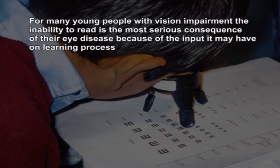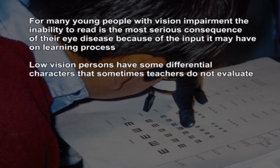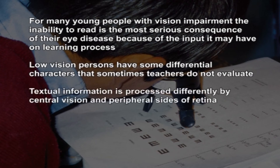For many young people with vision impairment, the inability to read is the most serious consequence of their eye disease because of its impact on the learning process. Low vision persons have some differential characteristics that teachers sometimes do not evaluate, as textual information is processed differently by central vision and peripheral sites of the retina.